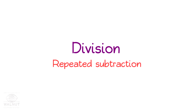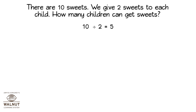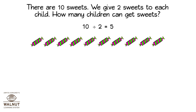Division is repeated subtraction. There are ten sweets. We give two sweets to each child. How many children can get sweets? Here are ten sweets. From these ten sweets, we shall take away two each time.